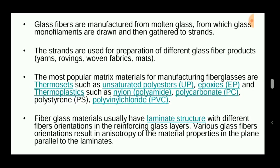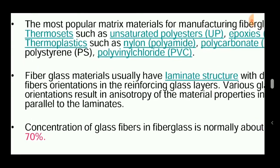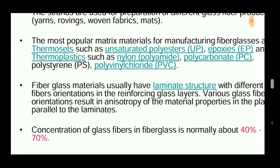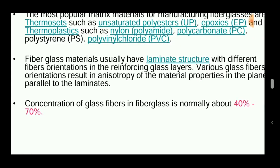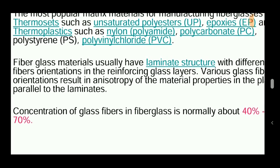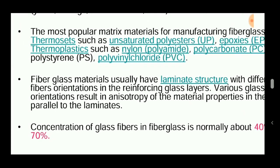Glass fibers are a popular matrix material for the manufacturing of fiberglass with thermosets such as unsaturated polyester and epoxies, and thermoplastics such as nylon, polyamide, and polycarbonate. This fiberglass forms a laminate structure — a flat sheet joined or combined with resin applied over the top, then a sheet is placed and resin applied again, with different fiber orientations in the reinforcing glass layers.